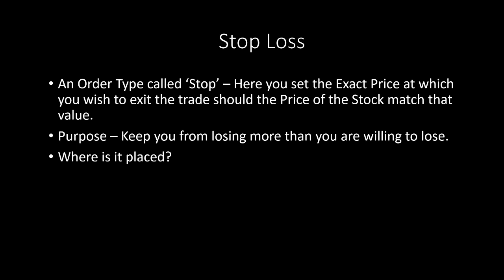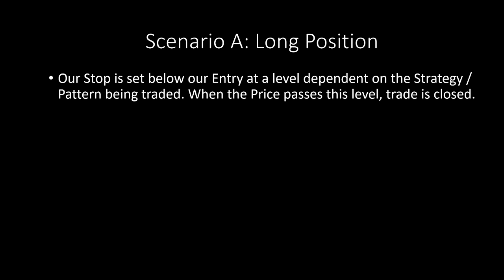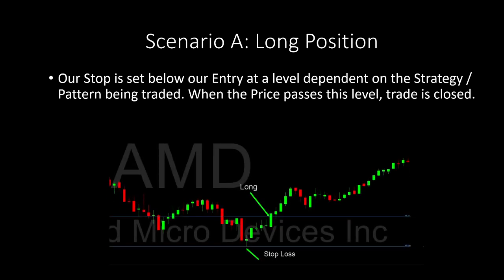Scenario A: you're going long, you've bought a stock, and now you want to set your stop. Our stop is going to be set below our entry, at a level that depends on the strategy or pattern being traded. Once the price passes this level, the trade is closed. Take EMD for example — we're buying it above this level, see where the arrow is pointing. We are going long and our stop loss could be the low of day in this scenario. If the price passes below this level, we're out of the trade with a loss.